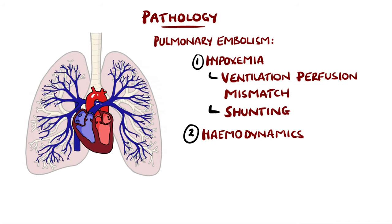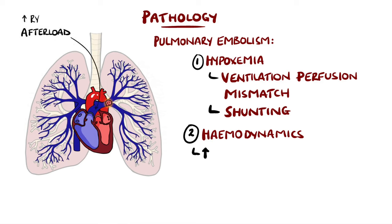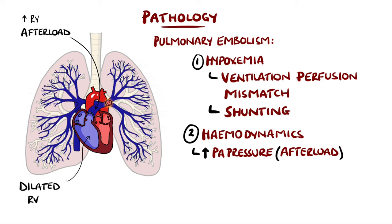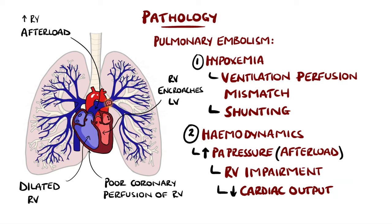The second problem involves hemodynamics. Normally the right ventricle is thin-walled compared to the left ventricle as it pumps against smaller pressures. But an embolus in the proximal pulmonary artery increases the pressure within the pulmonary artery, which is essentially the afterload of the right ventricle. The right ventricle cannot cope with the increased pressure and begins to dilate, which stretches the thin walls and impairs coronary perfusion, causing ischemia and right ventricular failure. The dilation can also impair the left ventricle, ultimately leading to cardiac output dropping and hypotension.